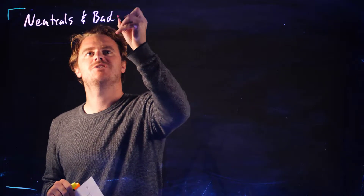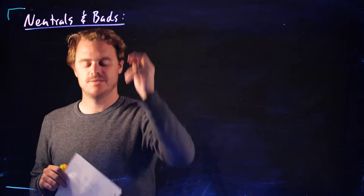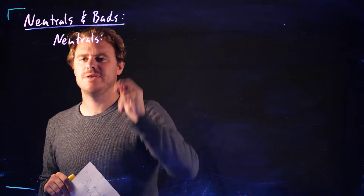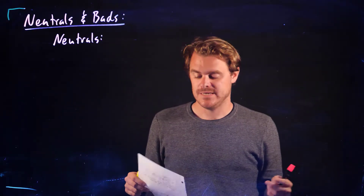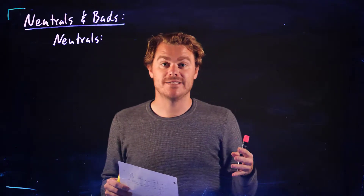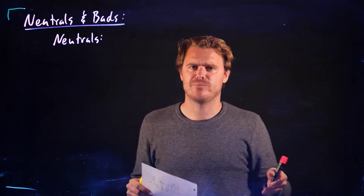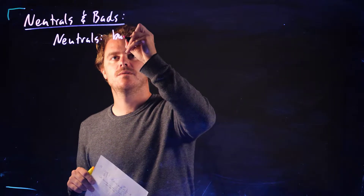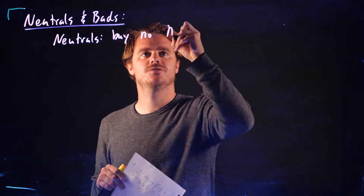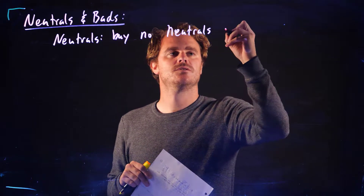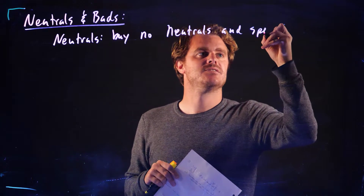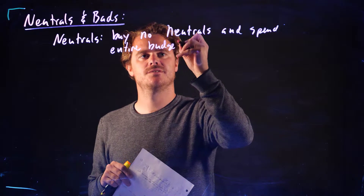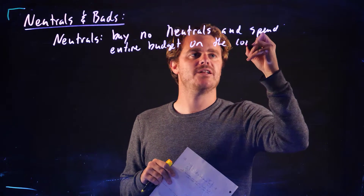With neutrals, these are goods we don't care how much we have. If one commodity is a good and the other is a neutral, we're going to spend all of our money on the good — we're going to buy no neutrals and spend the entire budget on the commodity which is a good.